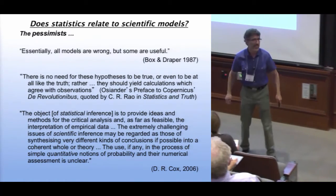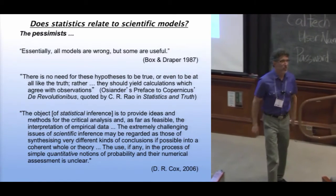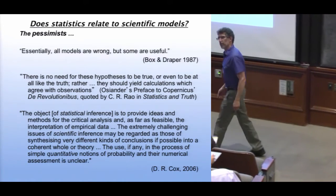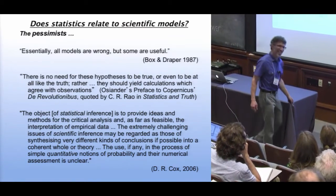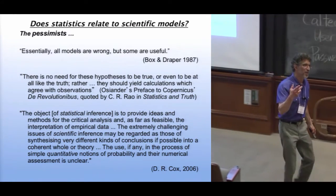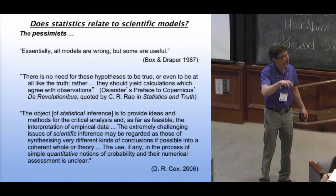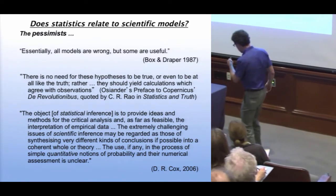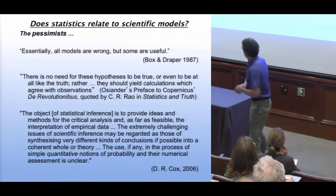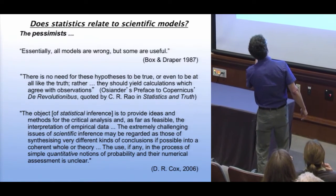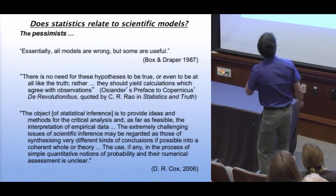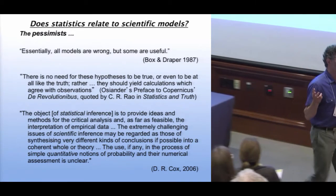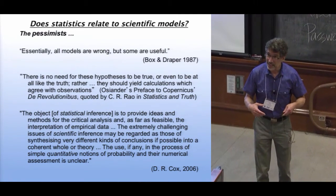C.R. Rao, also in his 80s or 90s, has more gold medals than any other living statistician. He quoted Osiander's preface to Copernicus in an autobiographical book. Copernicus said the sun is in the middle of the universe, not the earth, and was scared to publish because it went against the church. His uncle Osiander, a bishop, said: 'There is no need for these hypotheses to be true, or even anything like the truth — it just has to be that calculations agree with observations.' And D.R. Cox wrote in his last book that 'the use, if any, of quantitative notions of probability is unclear.' Depressed people.